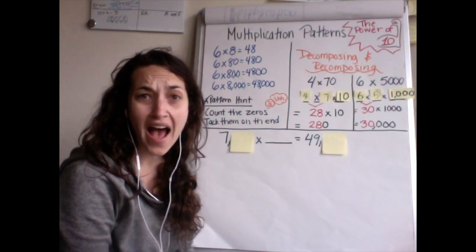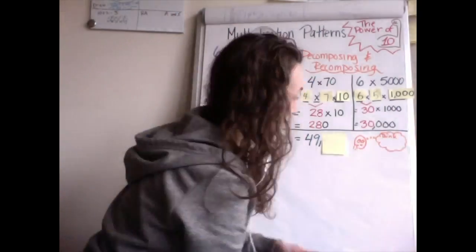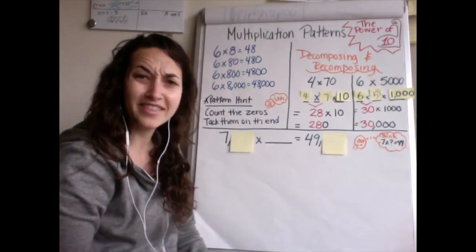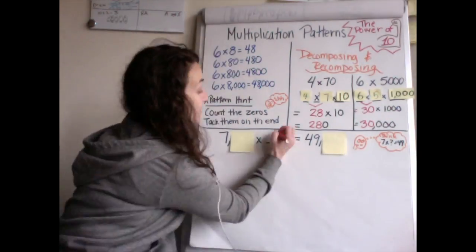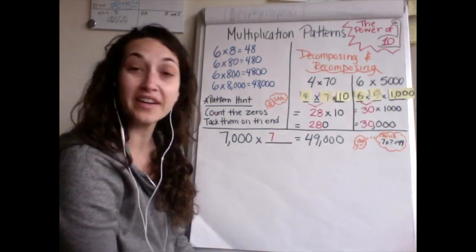So now I don't even have to worry about those zeros right now. I can just think, 7 times what is 49? I know that 7 times 7 is 49, so my answer is going to be 7. So 7,000 times 7 equals 49,000.